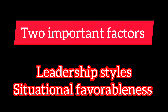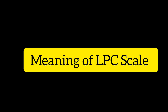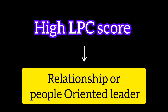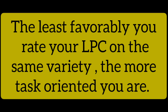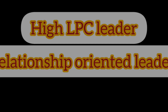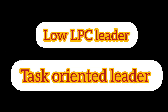Let's take a closer look at the first factor: leadership style. Fiedler developed the Least Preferred Co-worker (LPC) scale. The LPC scale refers to leaders being asked about the person with whom they least like to work. A high LPC score refers to a relationship-oriented or pupil-oriented leader — the more positively you rate your LPC, the more relationship-oriented you are. On the other hand, a low LPC score indicates a task-oriented leader.